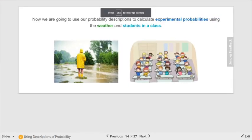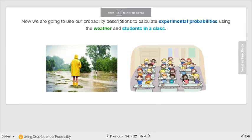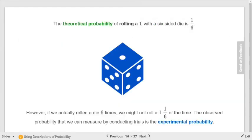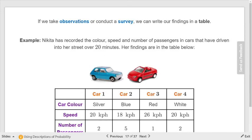The next thing we're going to look at is using probability descriptions to calculate experimental probabilities of weather and students in class. Remember, experimental probabilities—that's when you're actually doing the experiment. It's never going to be perfect like theoretical probability. Remember the difference between the two of them, experimental and theoretical probability. However, if you do enough experiments, it usually gets pretty close to the theoretical. Keep that in mind as well.